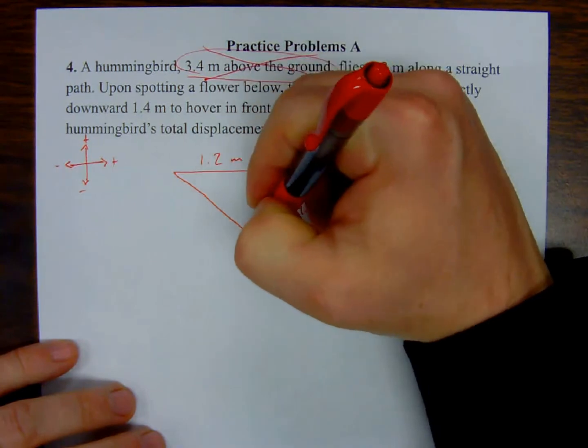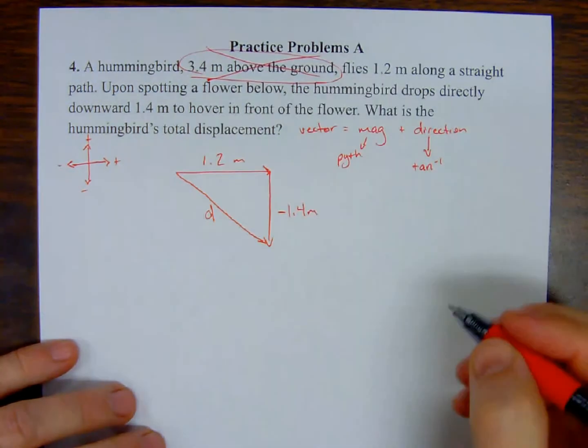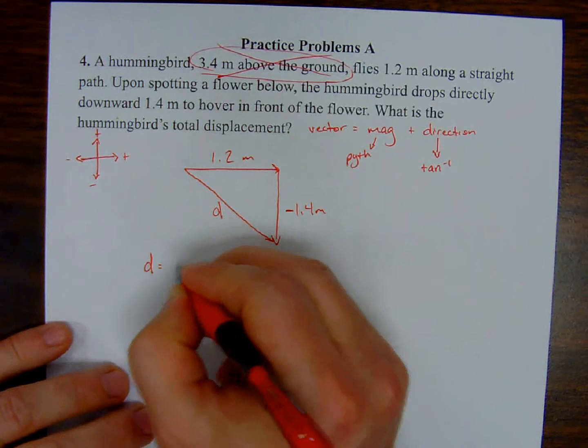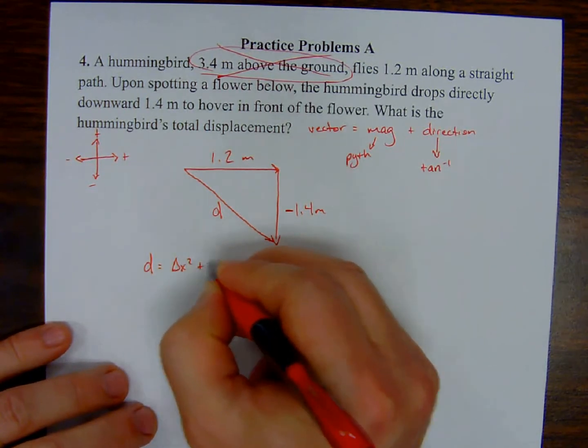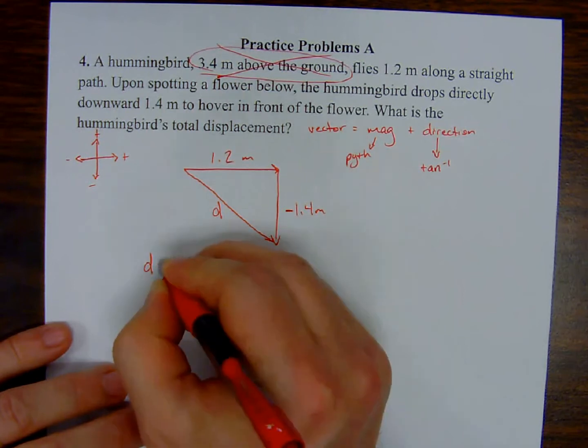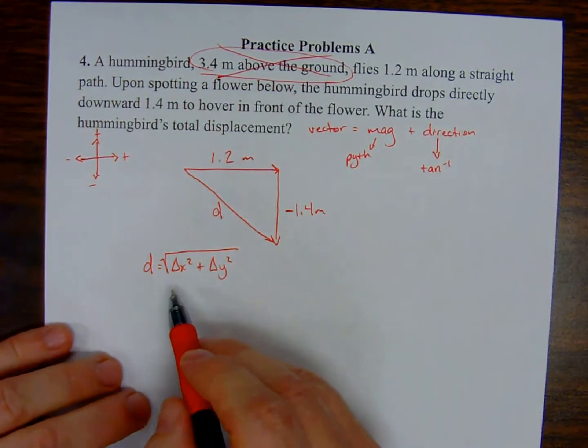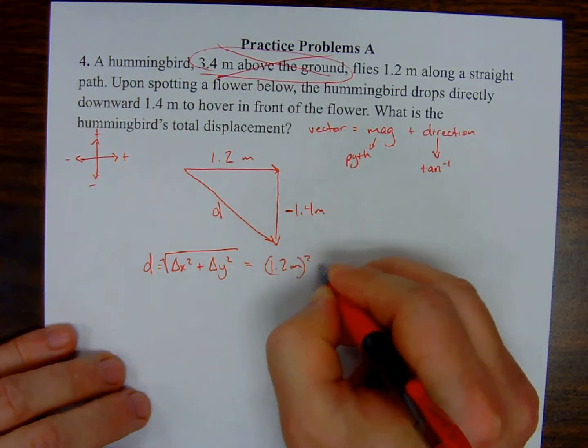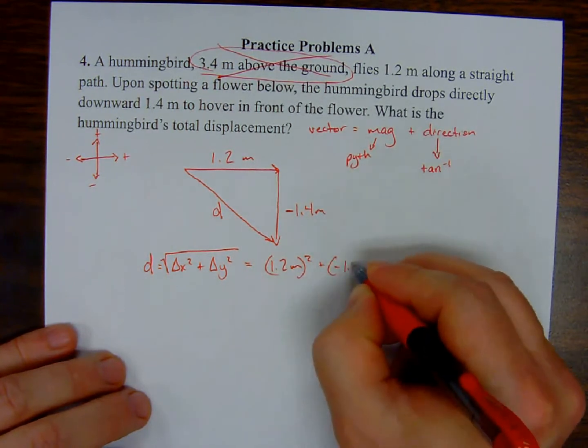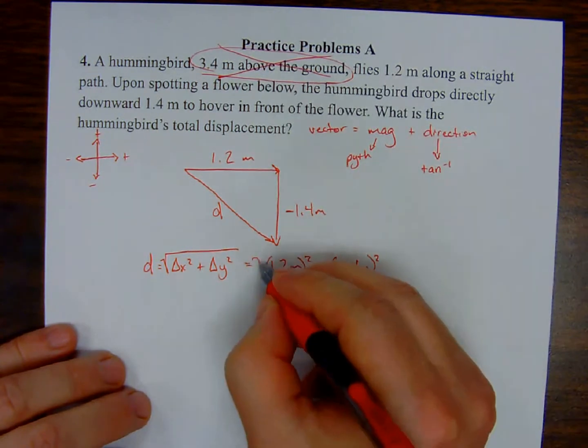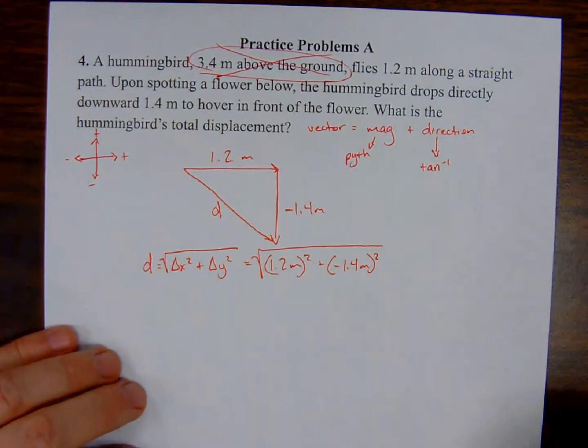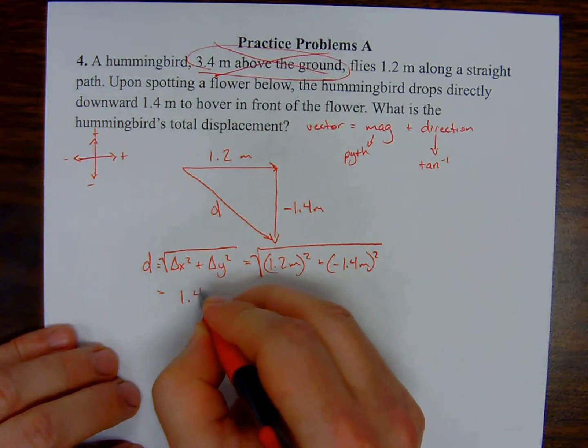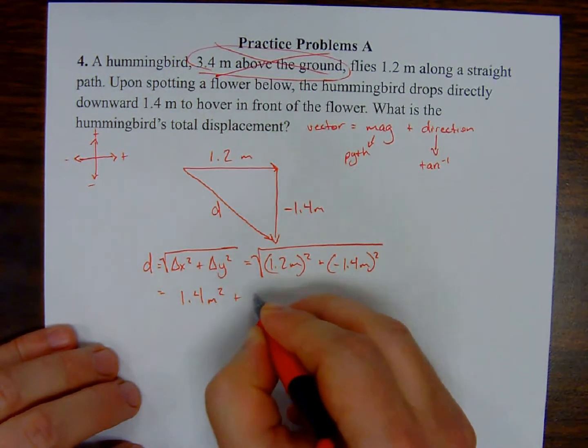Let's get started with the Pythagorean theorem. If we solve for the resultant, meaning essentially square root it to start, we end up with this equation. Now that we know where everything is supposed to go, we can actually insert the values. Make sure that you do not forget about the negative sign in front of that 1.4 meters because the direction is down. Actually squaring those, I end up with 1.4 meters squared plus 2.0 meters squared.